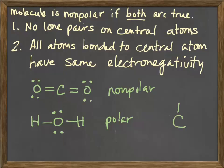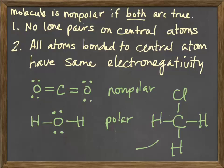How about chloromethane? There are no lone pairs on the central atom, but one of those atoms - chlorine - has a different electronegativity than the hydrogens. Chlorine is more electronegative than hydrogen. Even though it forms a tetrahedral shape which is symmetrical in three dimensions, one atom is pulling harder than the others, so there's a net movement. This one is polar.